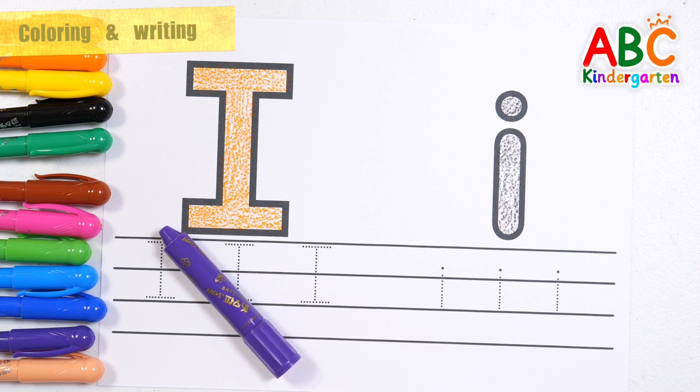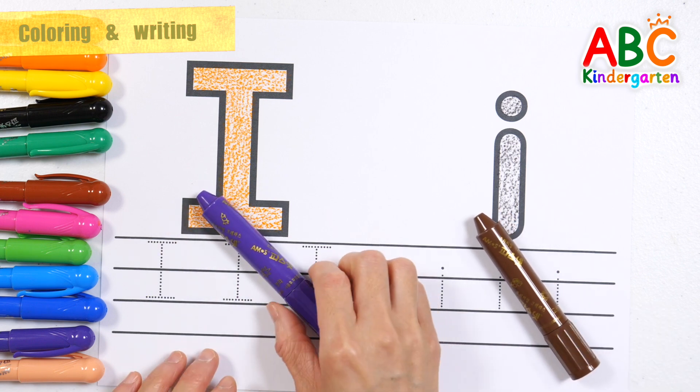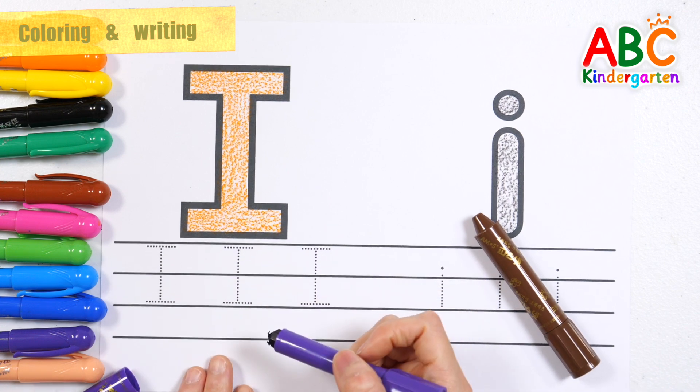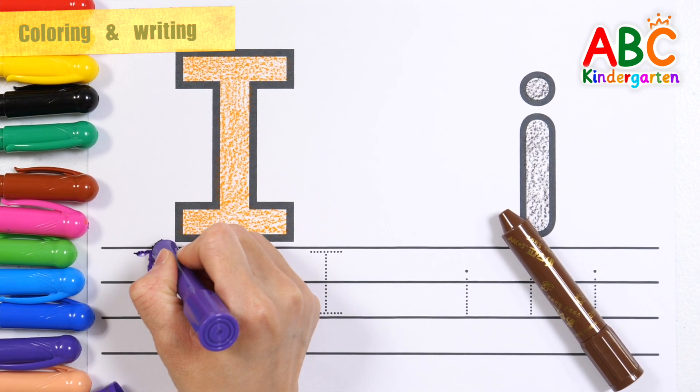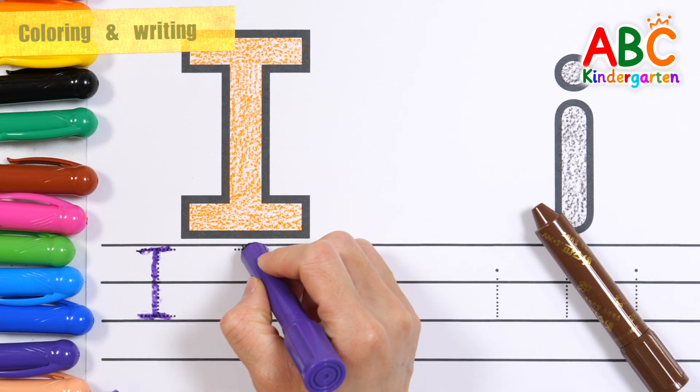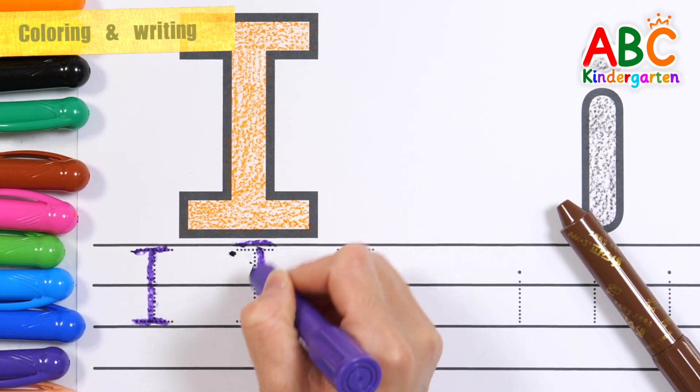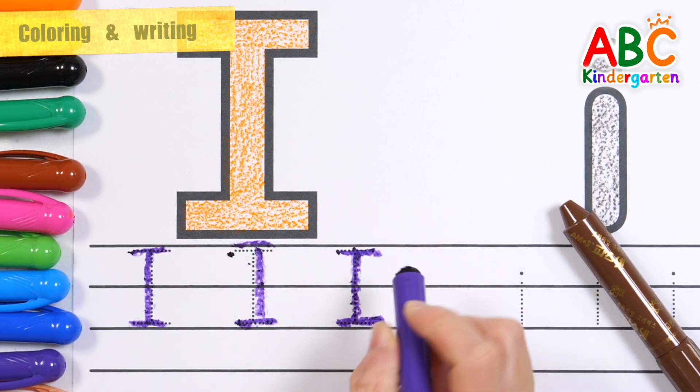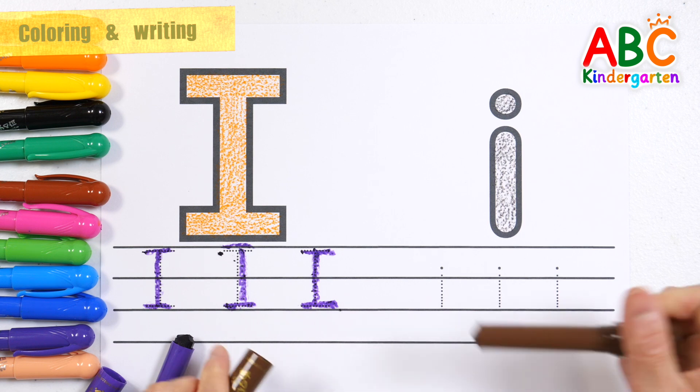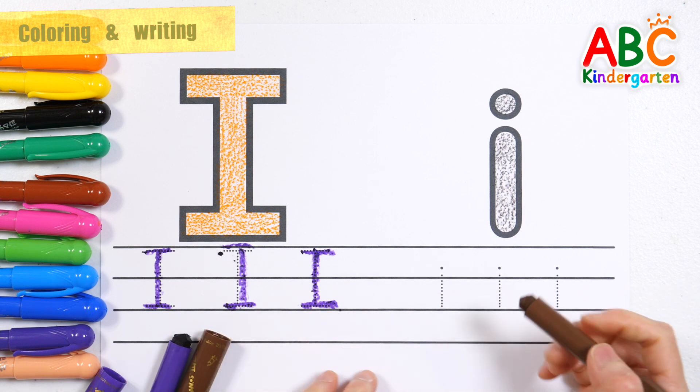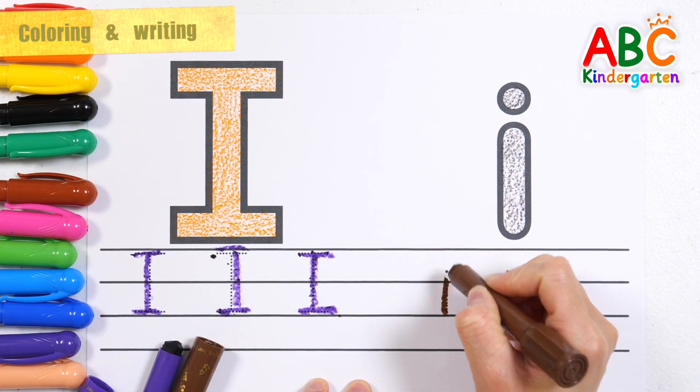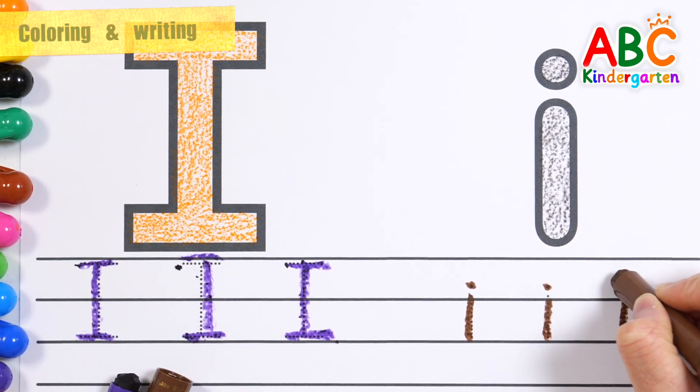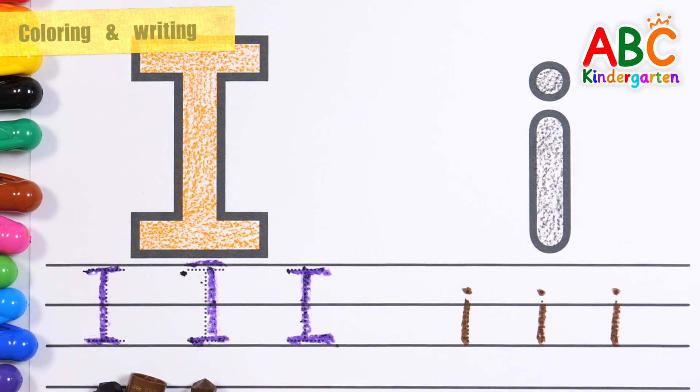This time, we will practice writing. Let's write uppercase letters three times with purple crayon. Uppercase letter I. Let's write the lowercase letter I. How? Lowercase letter I. Now I know my ABCs, next time won't you sing with me.